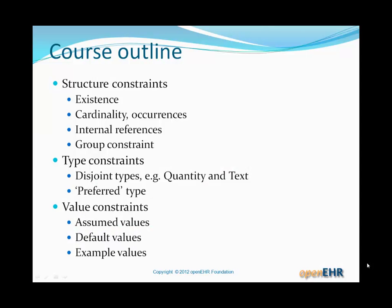Some of the topics we'll cover: aspects of constraining structure to do with attributes — existence, cardinality, something new called occurrences, internal references, a new type of constraint in ADL 1.5 called group constraint, also some type-related constraints and some value-related constraints, including default and example values.